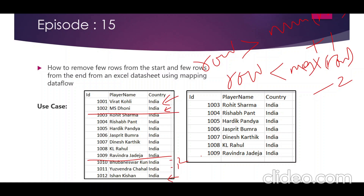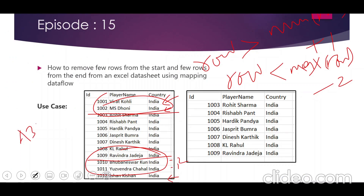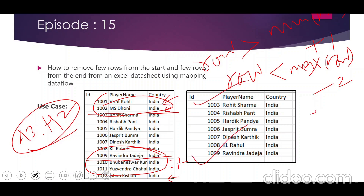We can use this logic to eliminate any number of records from the start or end when we don't know the range in advance. In a previous video we used a fixed range approach, but this cache sink workaround is more flexible. That's it for this video — I hope you liked the content. Please hit the like button, subscribe to the channel, and stay tuned. Take care, thanks!